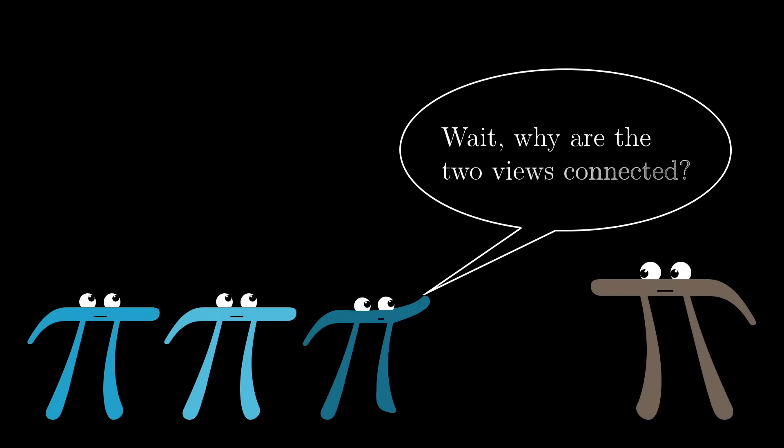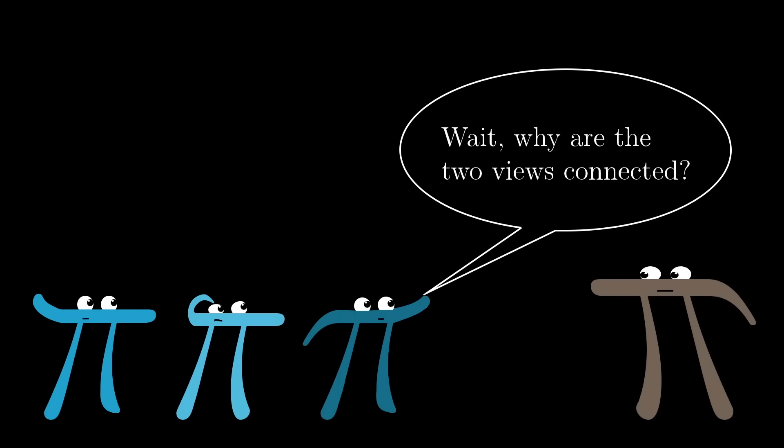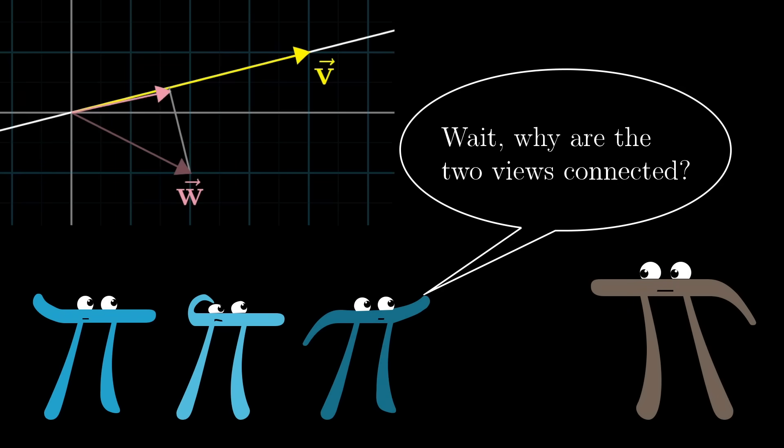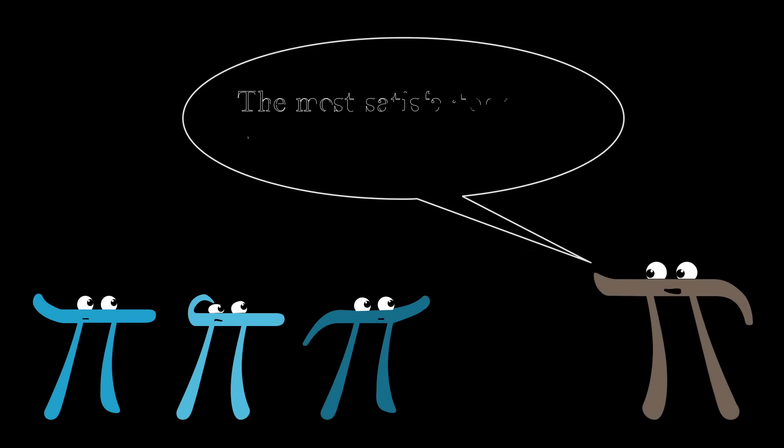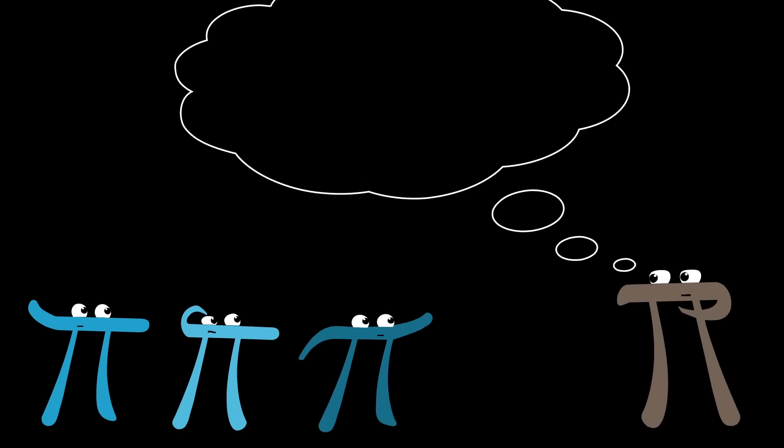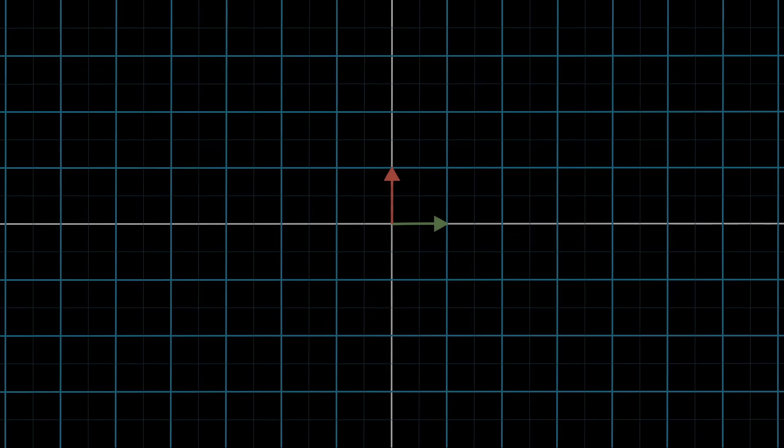There's also one other big question that confused me when I first learned this stuff. Why on earth does this numerical process of matching coordinates, multiplying pairs, and adding them together, have anything to do with projection? Well, to give a satisfactory answer, and also to do full justice to the significance of the dot product, we need to unearth something a little bit deeper going on here, which often goes by the name duality. But before getting into that, I need to spend some time talking about linear transformations from multiple dimensions to one dimension, which is just the number line.